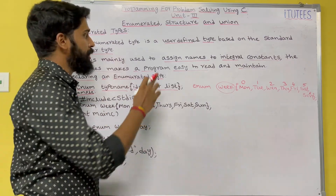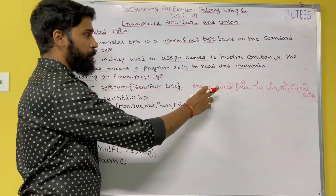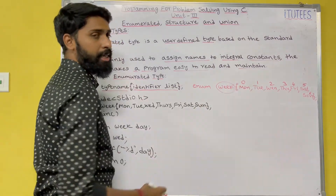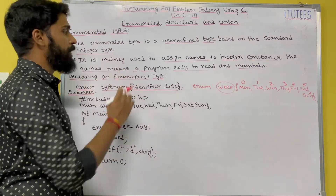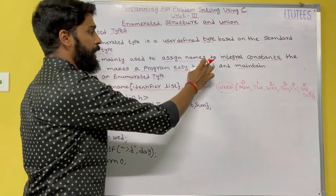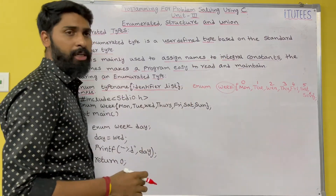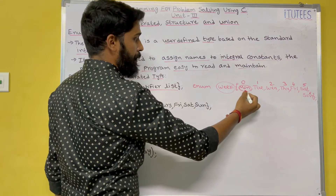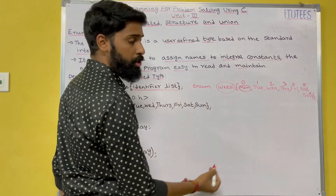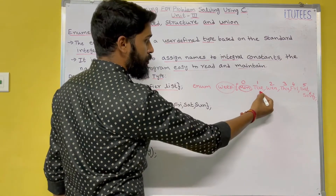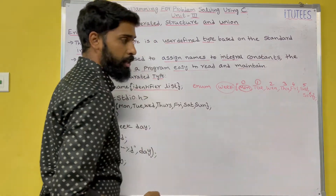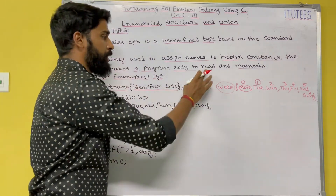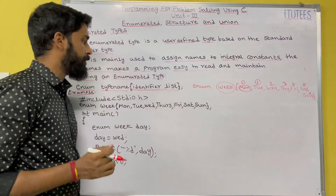The enumerated data type is a user-defined type based on the standard integer type. It is mainly used to assign names to integral constants. Here I assign the name Monday to integral constant zero, Tuesday to one, and so on. These names make a program easy to read and maintain.